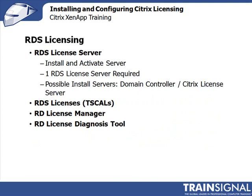From an RDS licensing perspective, you need an RDS license server — you have to install and activate the server, and we're going to do that once we start the demonstration. You also need at least one RDS server per domain or per forest. You can install the RDS server on a domain controller. I like to install it on a domain controller because it has the ability to gather information a little better and, because it's domain-wide, the other ZenApp servers or clients are able to find it easier — but that's a preference, not a requirement. The RDS licenses, which are the TS-CALs, you would acquire typically from Microsoft or from your partner as a set of serial numbers that you input into your license server.